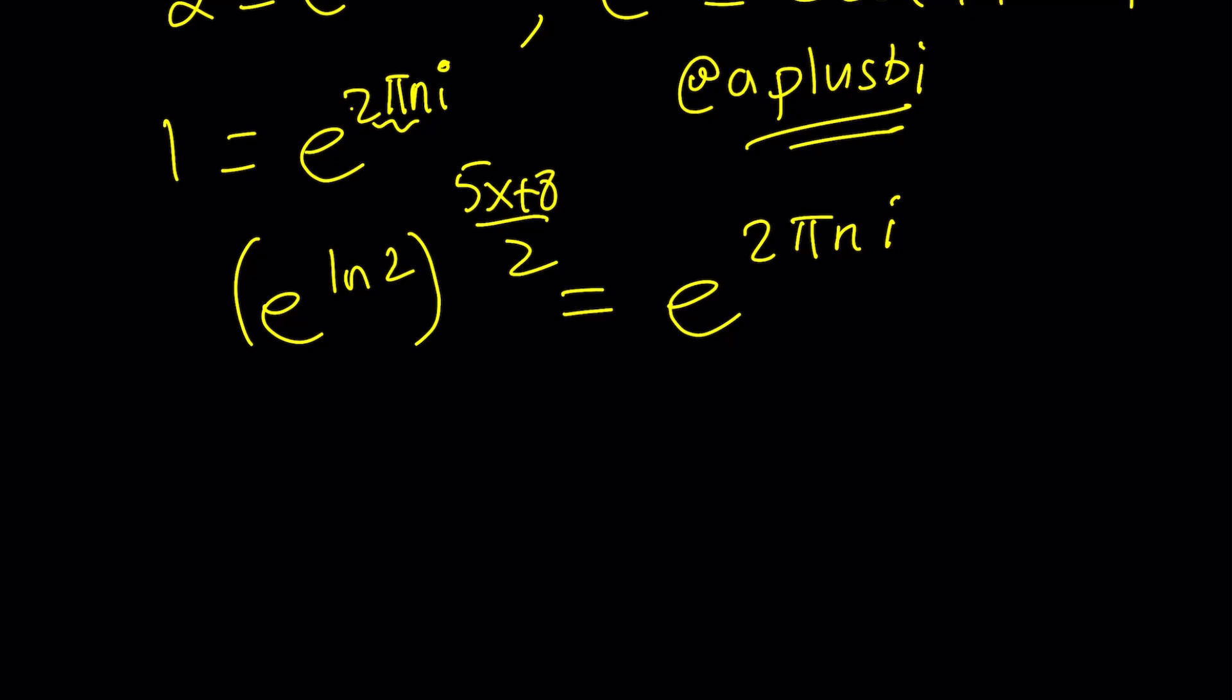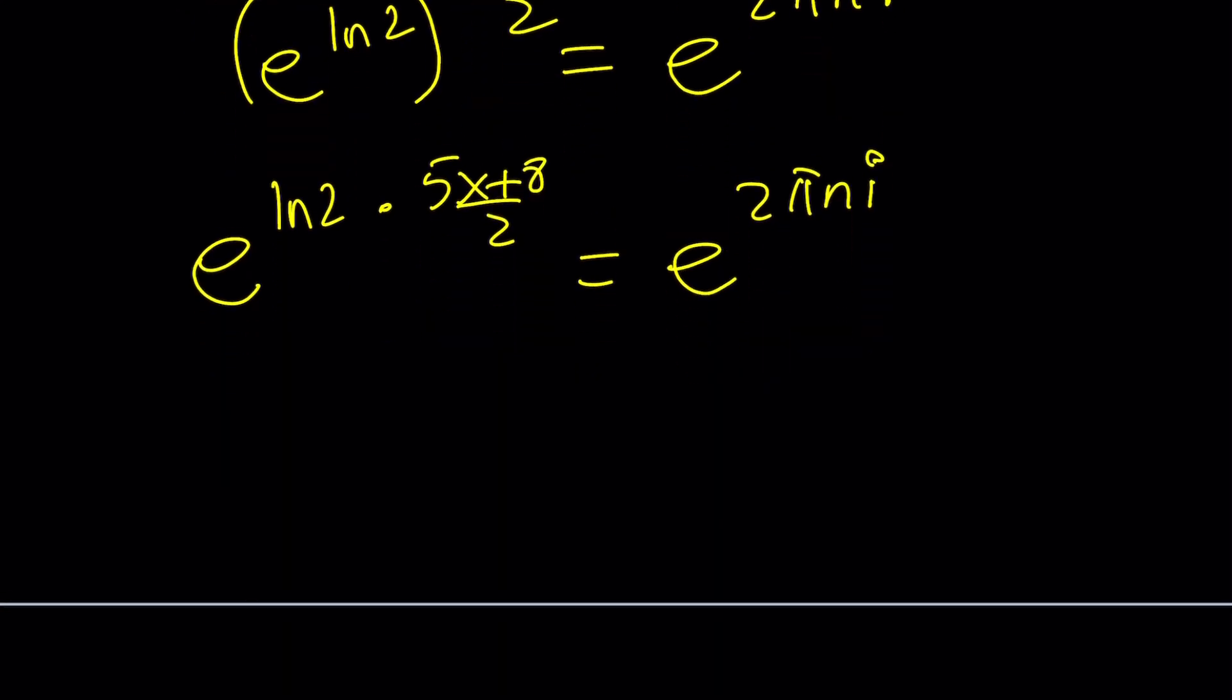We're going to multiply the exponents. So that's going to give us something like this. Let's just write it as ln 2 times 5x plus 8 over 2 equals e to the power 2 pi n i. And don't worry, we'll get to ln 2 in a little bit. Now, since both sides are equal, the exponents are equal. You can just also log both sides and you're going to get the same result. So ln 2 times 5x plus 8 over 2 equals 2 pi n i.